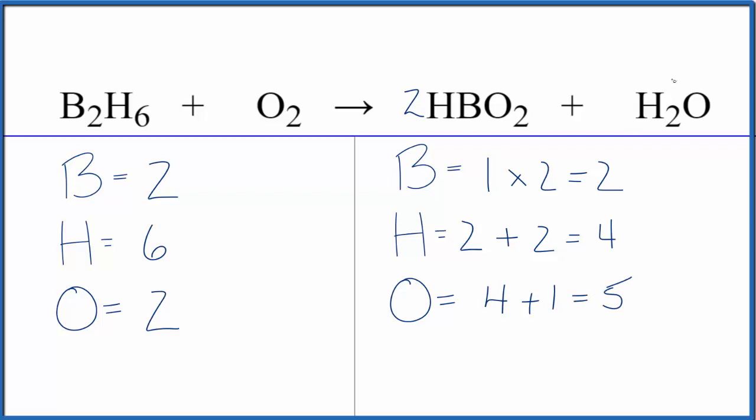It looks like if we put a coefficient of two in front of the water we'd have two times one, so two hydrogens plus two times two, that's four, so two plus four, that would give us six.